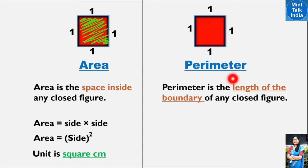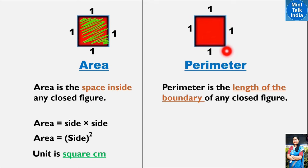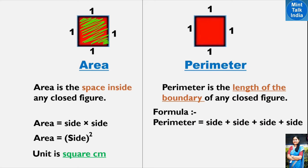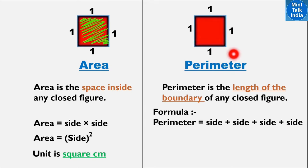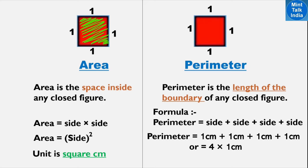One other concept is perimeter. Perimeter means the boundary of any shape — it is the total length of the boundary of any closed figure. The formula is: side plus side plus side plus side, meaning we add all 4 sides. Because all 4 sides of a square are equal, we can write it as 4 multiplied by one side. The answer is written in the unit centimeter.